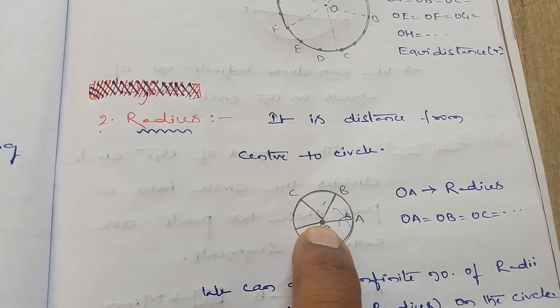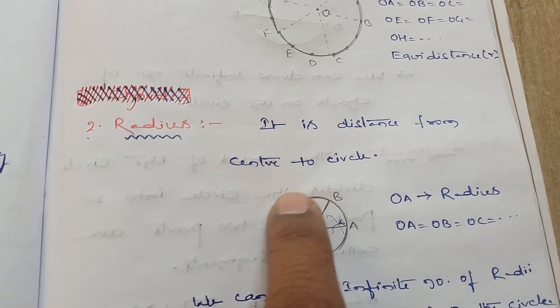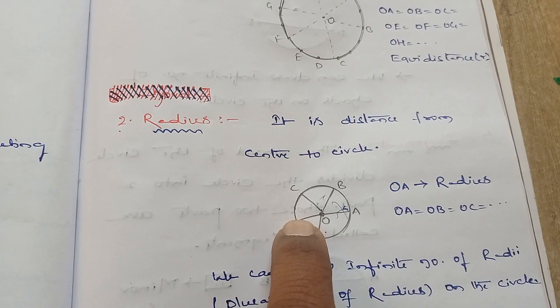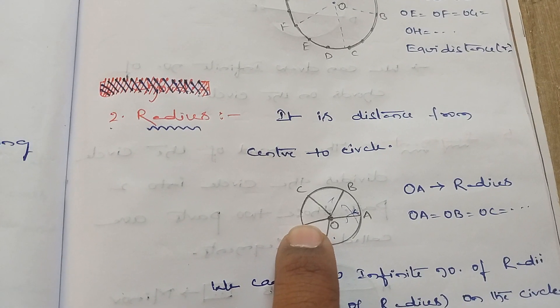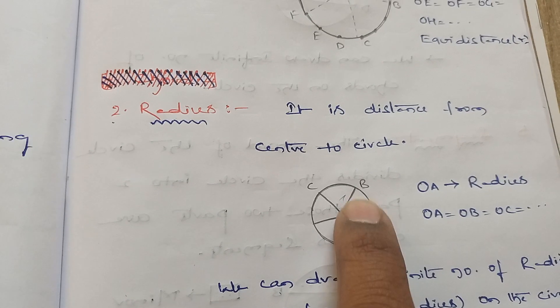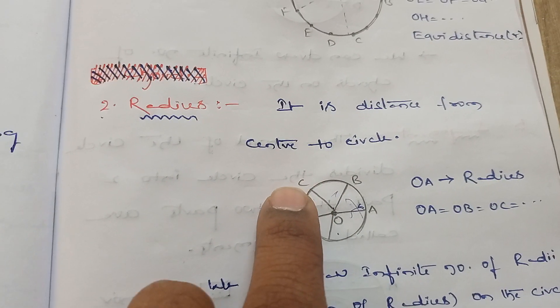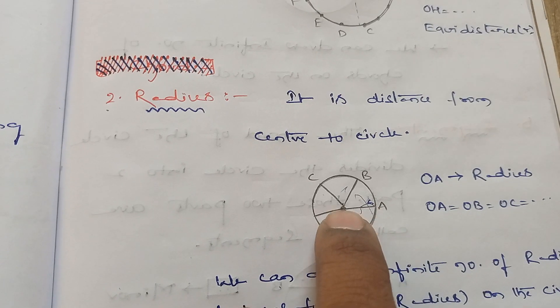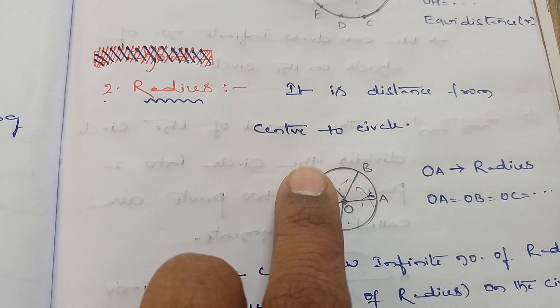Where O is the center and any point on the circumference, that equal distance we call a radius. Here A, B are some of the points on the circumference of the circle. Therefore, OA is called the radius, OB is called the radius, OC is called the radius.